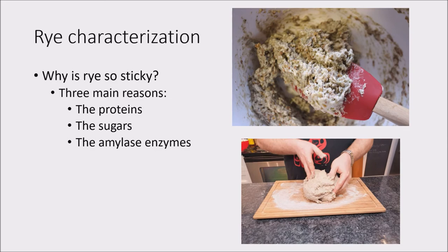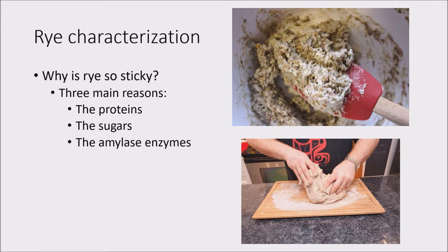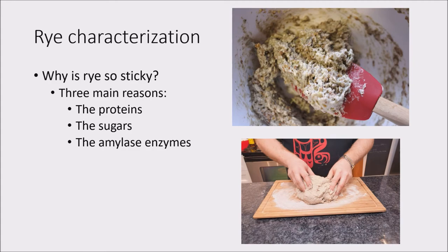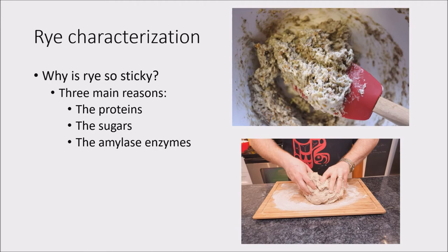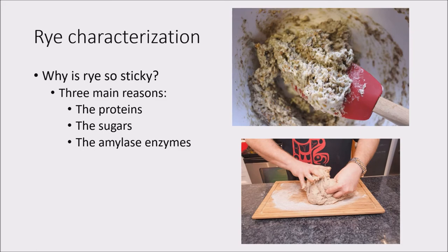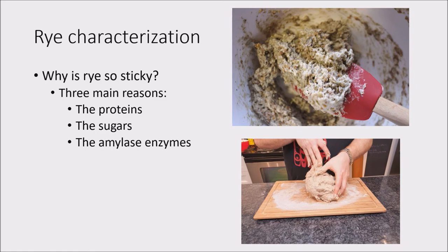So now I am moving on to the rye characterization section of this presentation, where I will discuss rye in a little bit more scientific detail. If you've ever worked with rye flour, you're probably thinking that it sounds absolutely crazy to make a bread that is 100% rye flour, because it creates such a sticky dough that acts almost more like a batter than a normal wheat dough, which tends to be more firm and elastic. So I will discuss why rye is so sticky — there are three major reasons: the gluten proteins found in rye flour, as well as the sugars and the amylase enzymes that are present in rye.